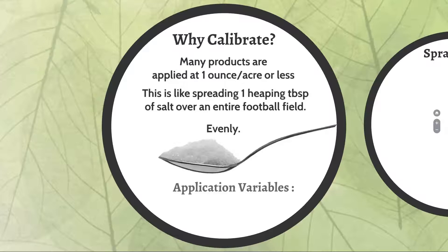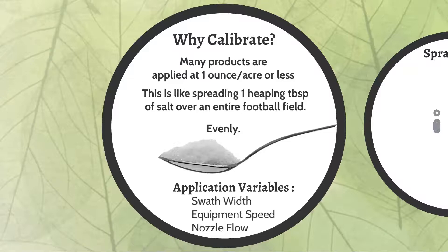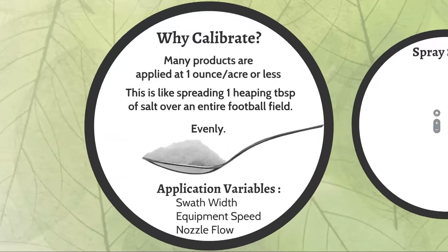Let's look at some application variables and how we can adjust them — going from maybe a Grazon application that held up fine with your sprayer, to now making an insecticide application. What do we need to change to have the same level of efficacy? We're going to look at adjusting your swath width, equipment speed, and nozzle flow from boomless sprayers. Let's start with swath width.